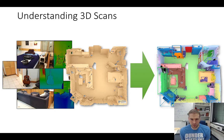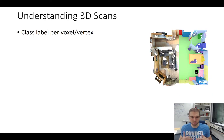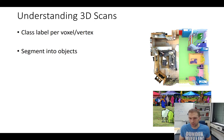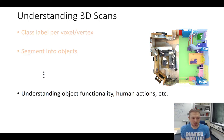In 3D scene understanding we have seen quite a bit of progress in the last few years. The traditional tasks we've been working on include semantic understanding — labels on a per-surface-point or per-voxel basis — training neural networks for semantic scene understanding. We also do segmentation, detecting objects, replicating tasks we've seen in 2D such as from COCO, but in 3D.